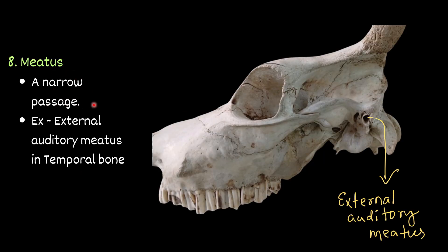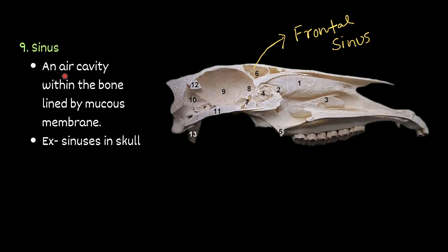Meatus — a narrow passage. For example, the external auditory meatus in the temporal bone. You can find this opening — this is the meatus; it leads to a narrow passage called the external auditory meatus in the temporal bone. Then sinus — an air cavity within the bone, lined by mucous membrane. You will find various sinuses in the skull. For example, this is the frontal sinus in the skull.